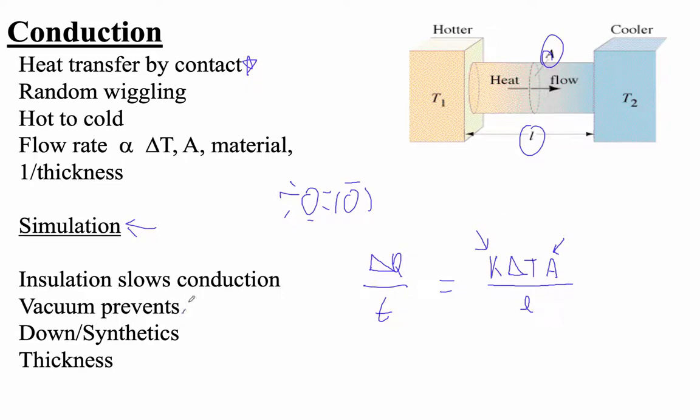If you have a vacuum—heat flow by conduction is flow through matter—if you have a vacuum, you don't have any heat flow by conduction. So this is why a thermos works. That doesn't mean there's no heat flow. It just means that there's no heat flow by conduction. You can get radiative heat transfer in a thermos. And one way to minimize radiative heat transfer is to silverize the surfaces.